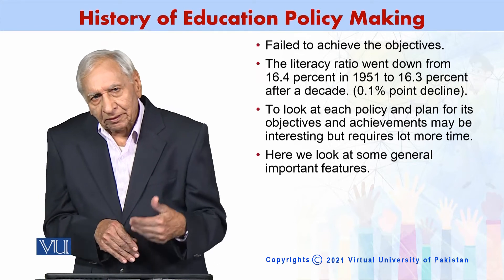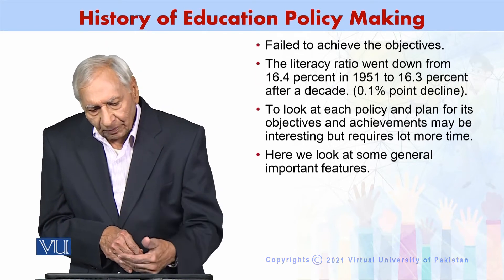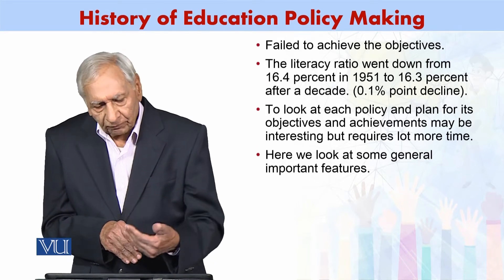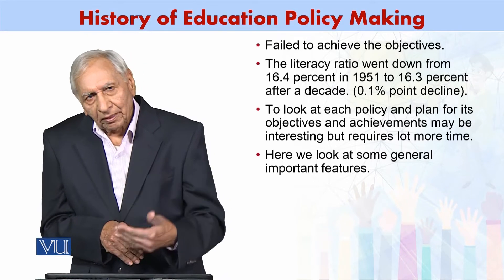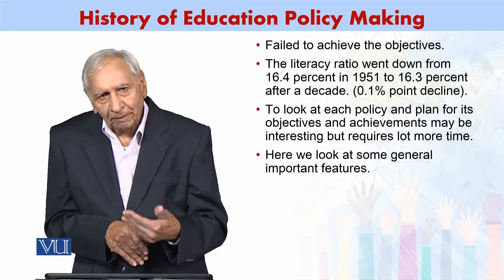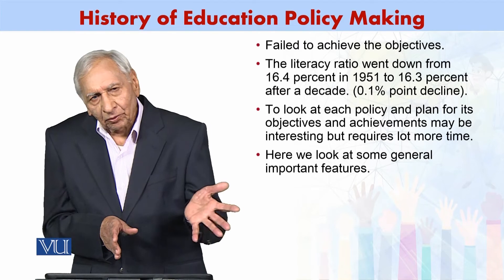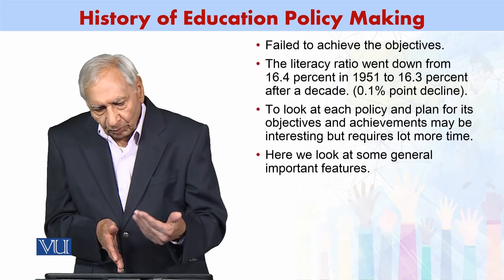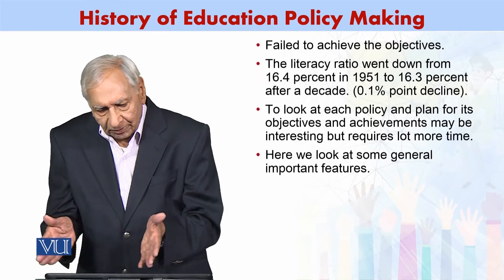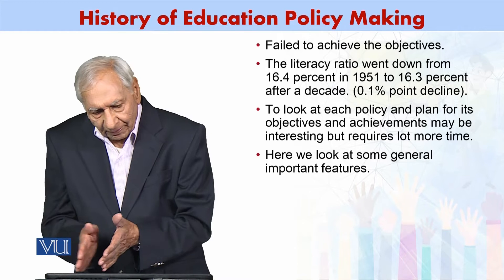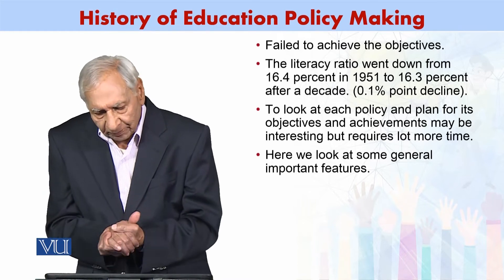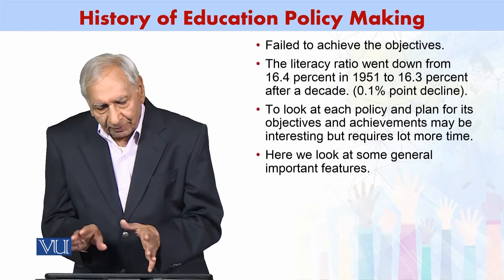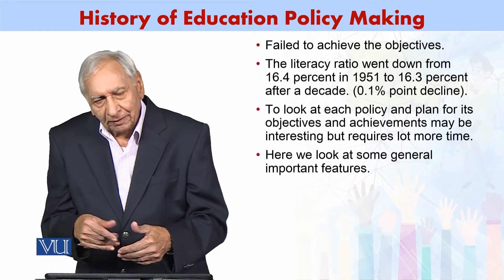The plan was made with good intentions, but the objectives were not achieved. In fact, the literacy rate instead of increasing remained stagnant — it actually saw a decline of 0.1 percentage point, going from 16.4 percent to 16.3 percent.